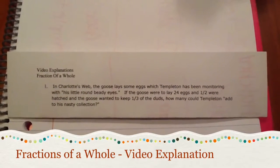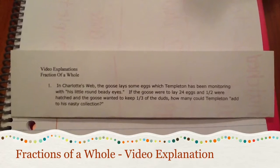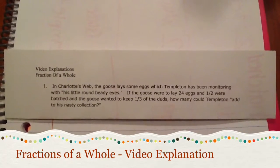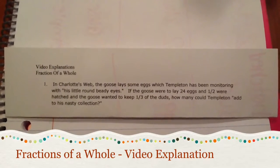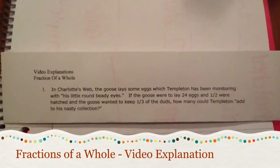In Charlotte's Web, the goose lays some eggs which Templeton has been monitoring with his little round beady eyes. If the goose were to lay 24 eggs and one half were hatched and the goose wanted to keep one third of the duds, how many could Templeton add to his nasty collection?